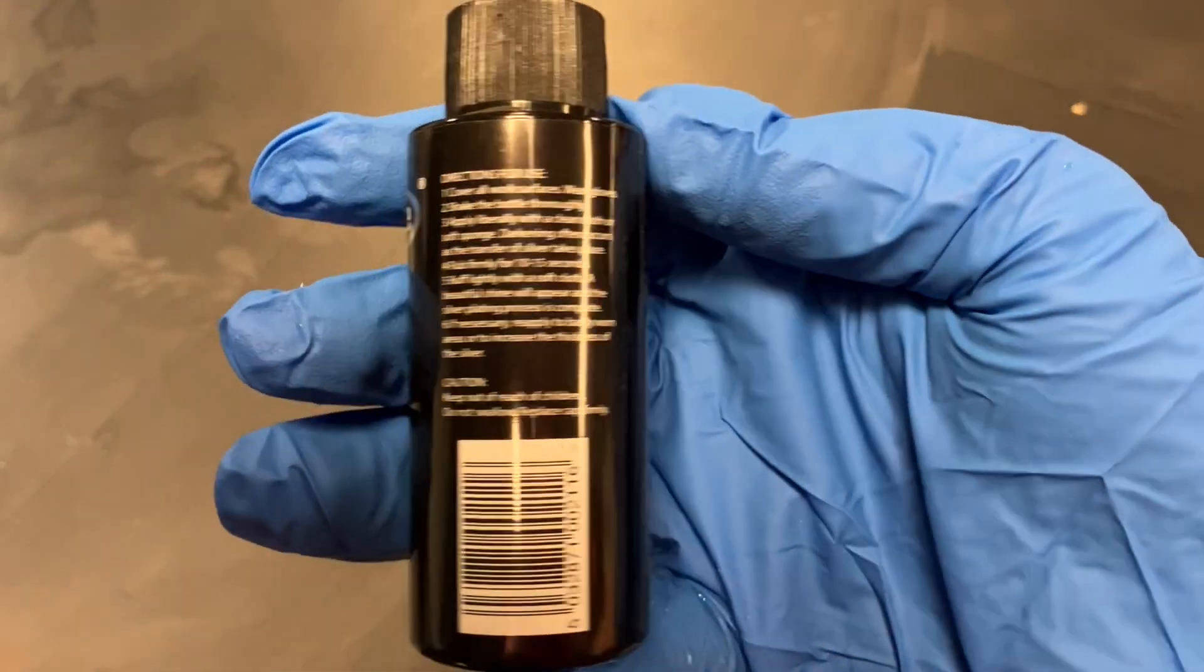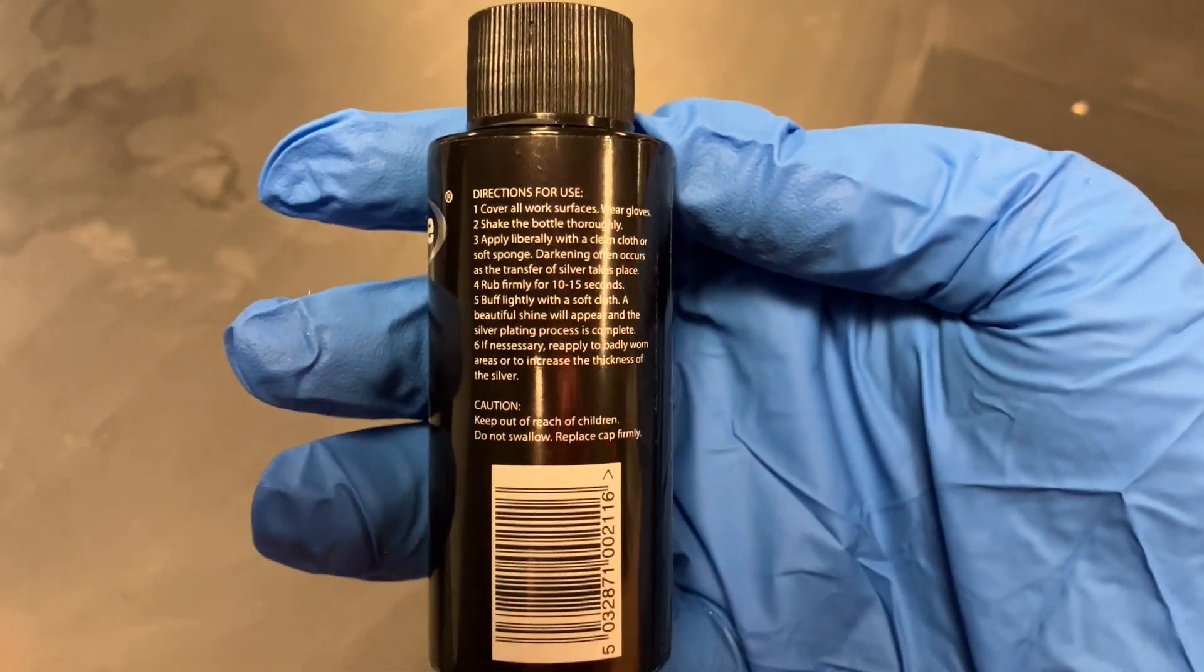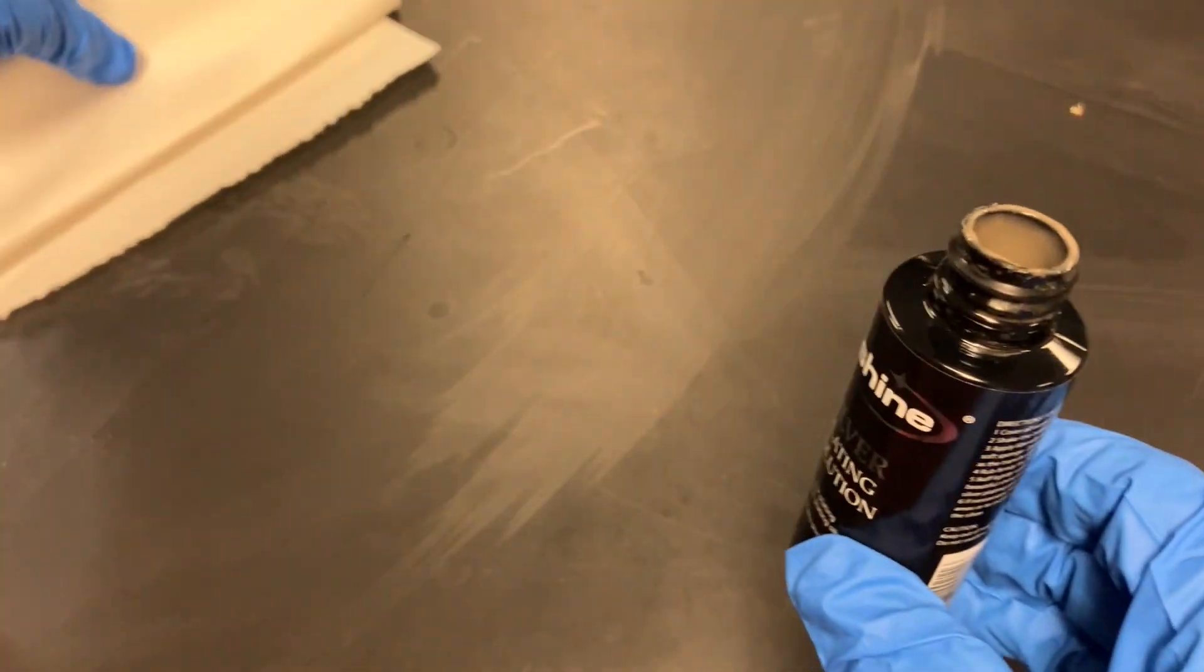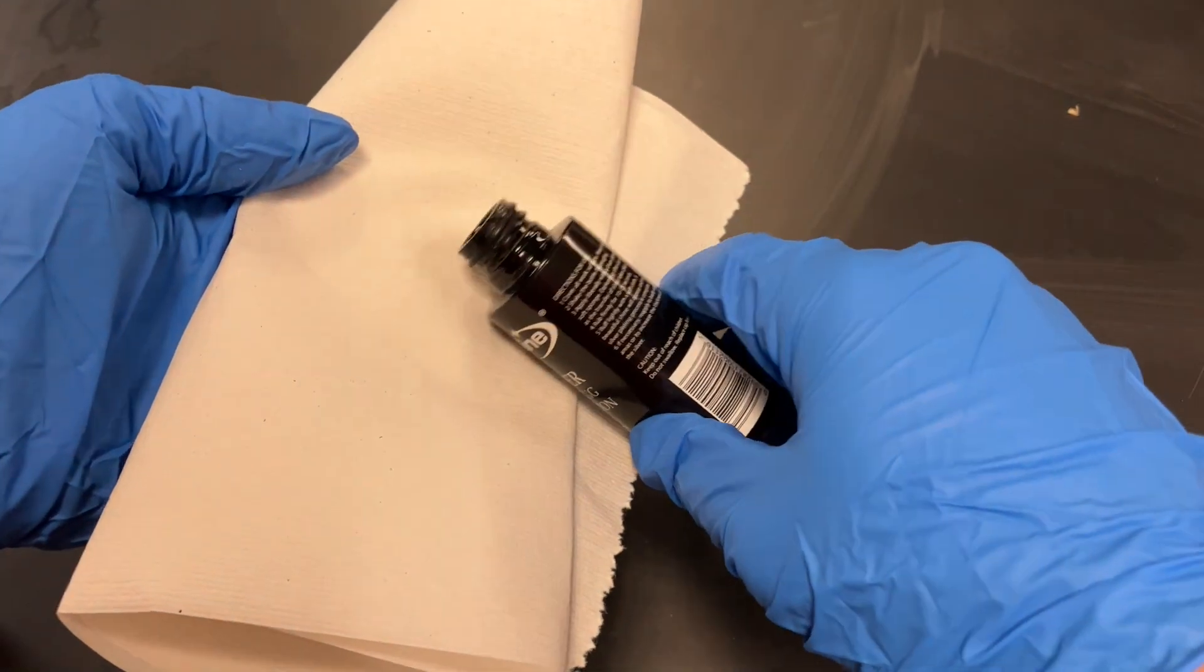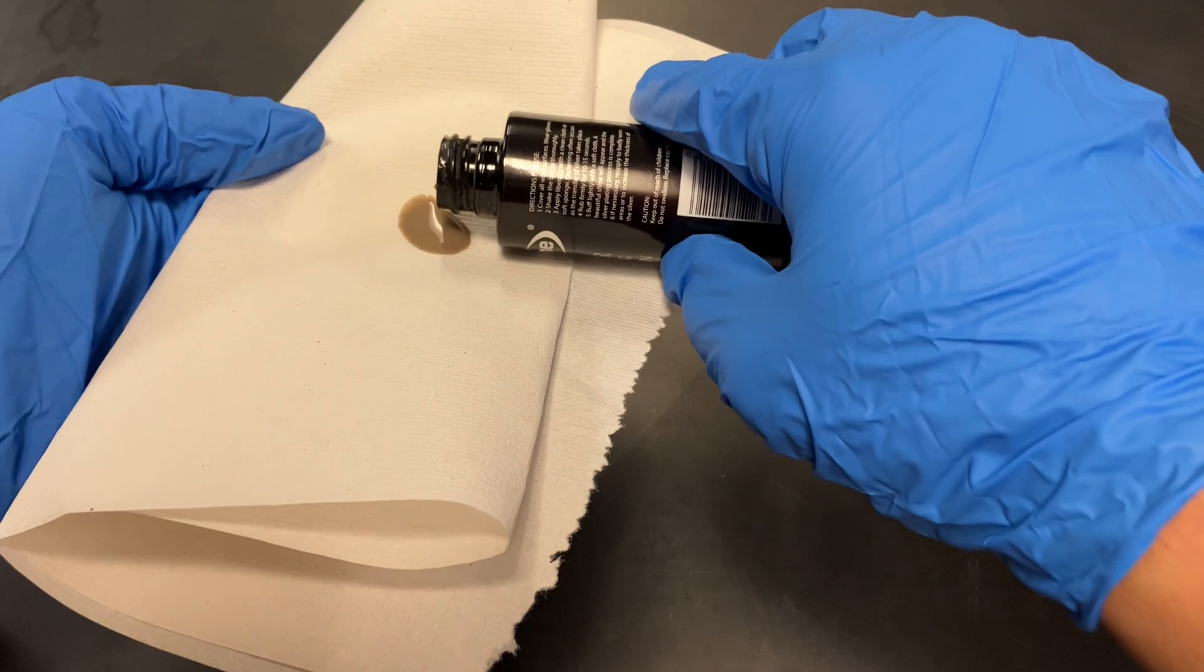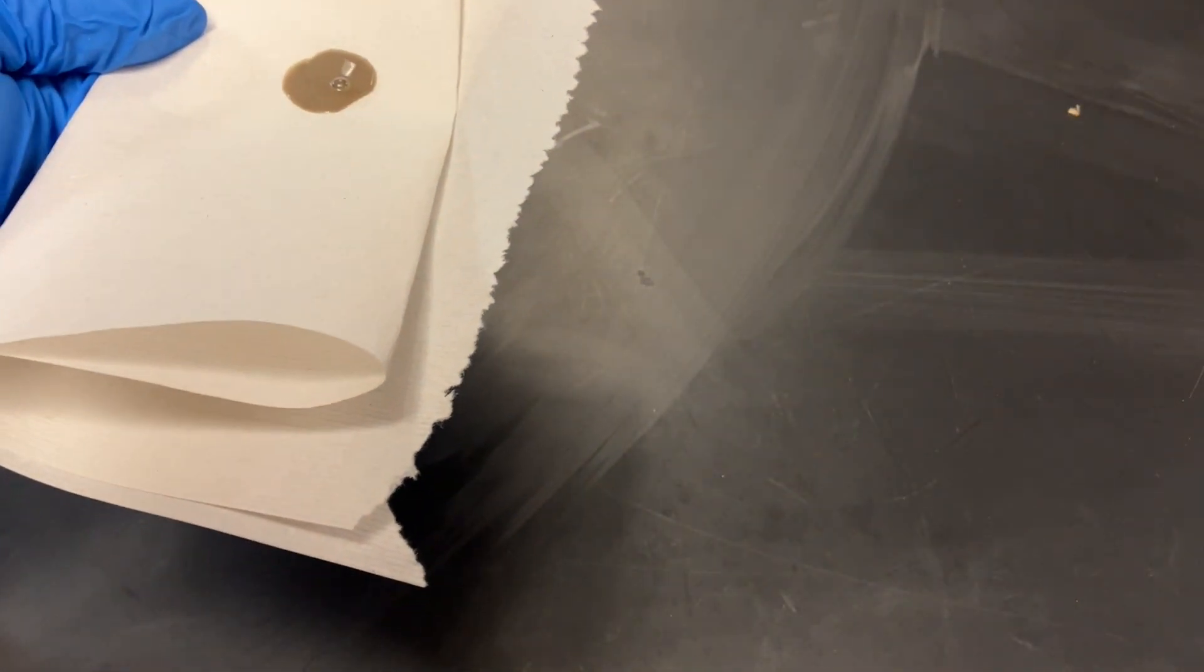The longer you let your object get plated, the thicker the plated metal will become, to a certain extent. So I'm going to let mine run for about 15 minutes, but in the meantime I'm going to show you an easier way to silver plate and give you some pros and cons at the end. As you can see, it just comes in a bottle.